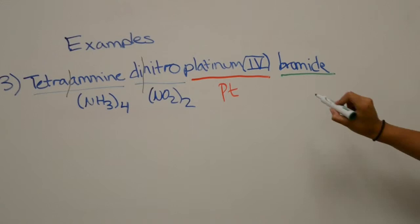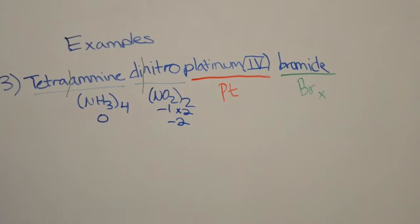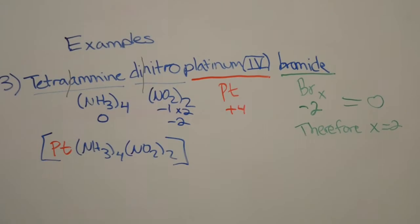The charges for amine is 0 and nitro negative 1, but since there are 2, gives it an overall negative 2 charge. Platinum IV has a positive 4 charge. We need an overall charge of 0. Therefore, the subscript for bromide needs to be 2, giving us an overall written formula as presented.